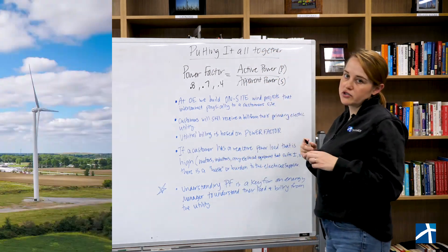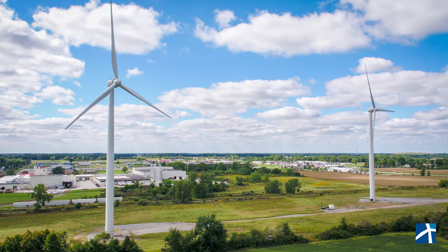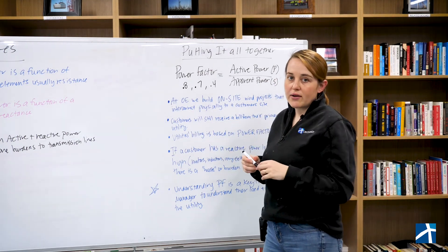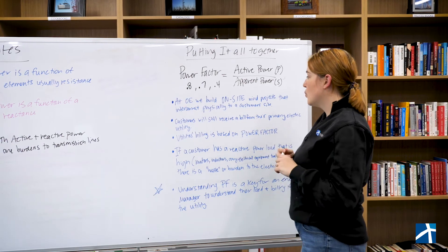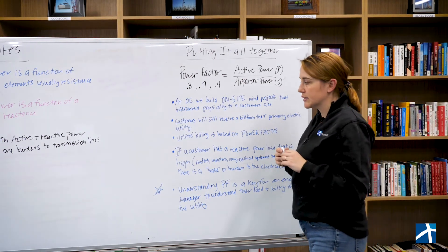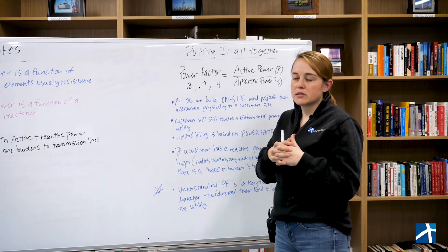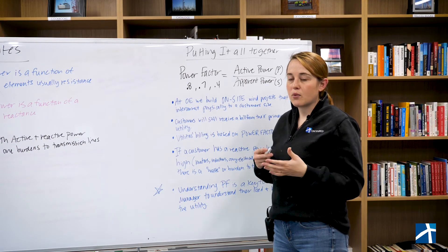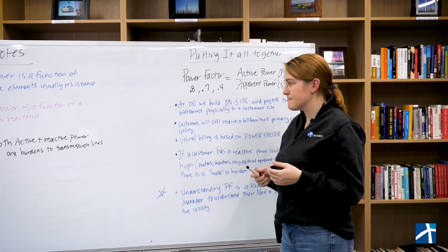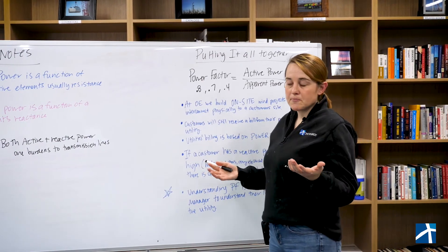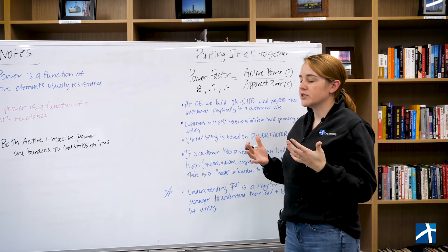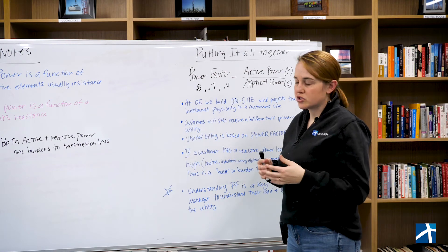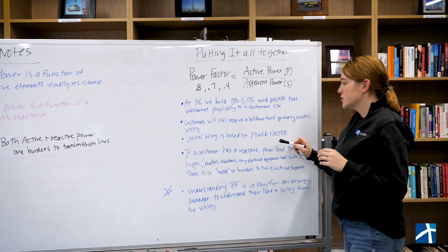So at One Energy, we build on-site wind projects that interconnect physically to a customer site. What that means is we're changing, we're trying to change that load profile at the plant. So customers will still receive a bill from their primary electric utility. So we oftentimes net meter, but every project we've put in the ground thus far has not been a 100% producer for a plant or a facility. So they have to be supplemented in some way. When we talk about supplementing their utility bill, we're talking about supplementing them with a local utility transmission distribution, something along those lines.